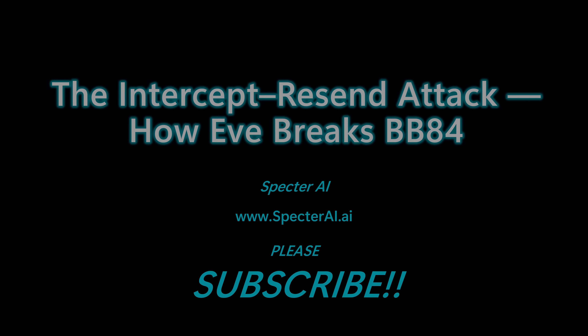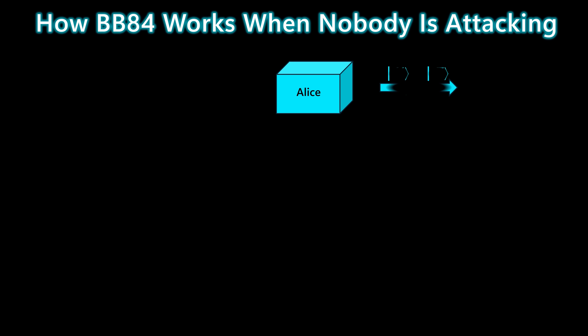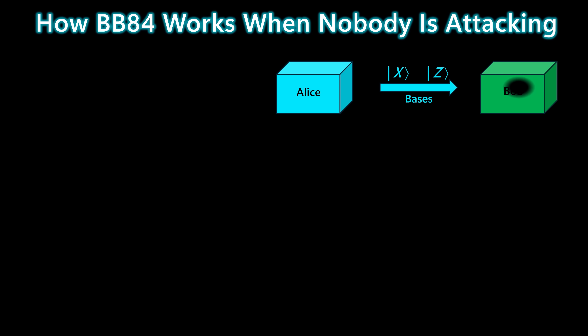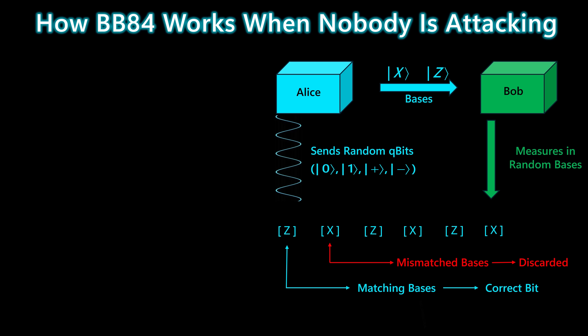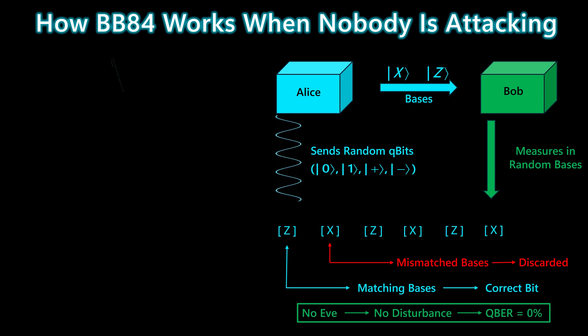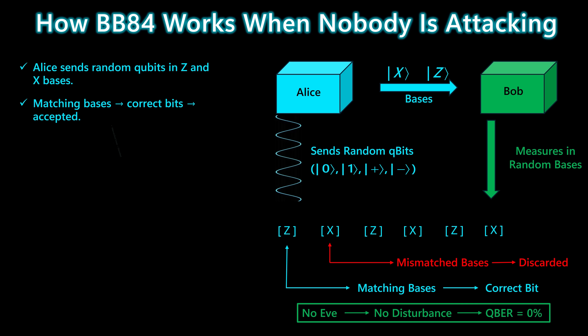Let's jump in. Before we talk about eavesdropping, let's look at how BB84 behaves when the channel is clean. Alice sends random qubits using either the Z basis or the X basis. Bob also measures in random bases. When their bases match, Bob gets the correct bit and it's kept. When their bases don't match, the result is discarded during sifting. With no Eve in the middle, there's no disturbance and the error rate stays essentially at zero.